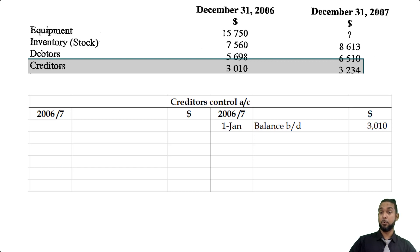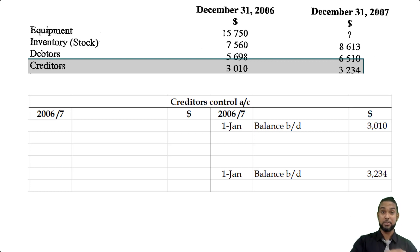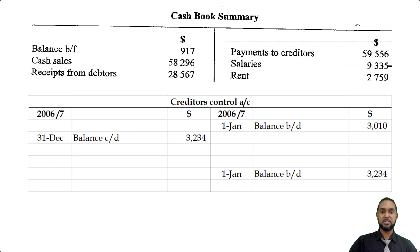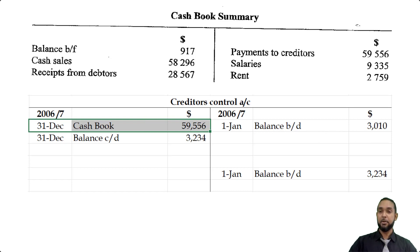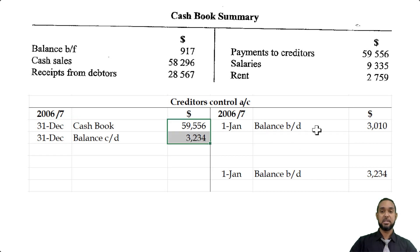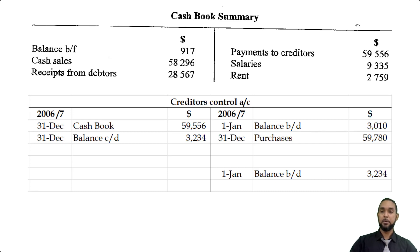Creditors is a liability — liabilities have credit balances at start — so the $3,010 is going to go on the credit side, and the $3,234 is going to be brought down on the credit side as well. But prior to being brought down on the credit side after you balance off the account, it has to first be carried down from the debit side. The next item is the payments to creditors from the cash book, which goes on the debit side of the control account because when you pay back your creditors, you reduce your liability, and to record a reduction in a liability you debit the liability account. The missing figure is the credit purchases — you balance off the account by adding up the debit side items and subtracting the credit side item to get credit purchases. When you total both columns, you get the same total.